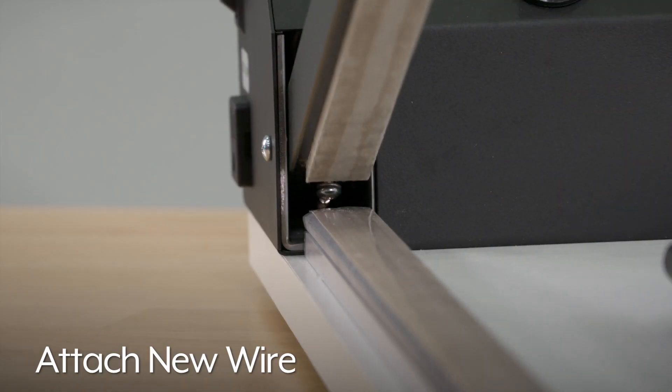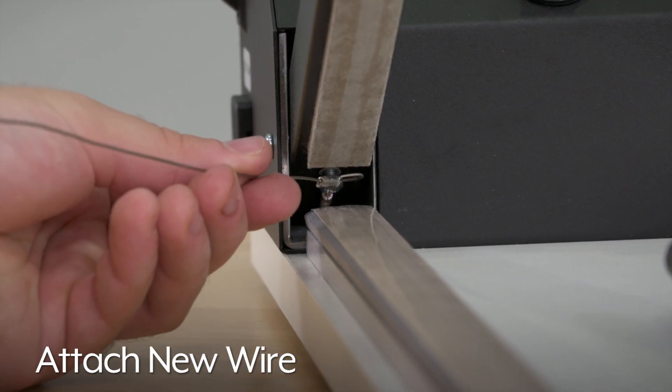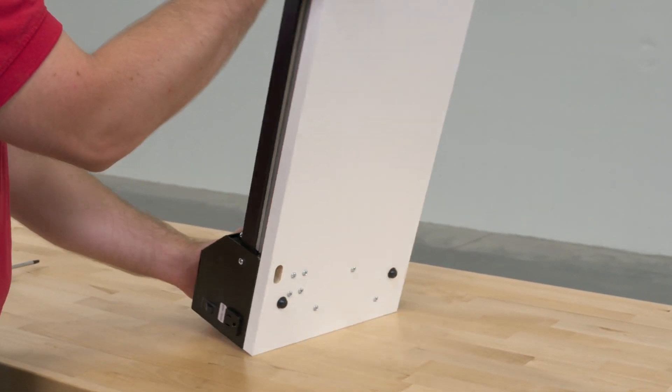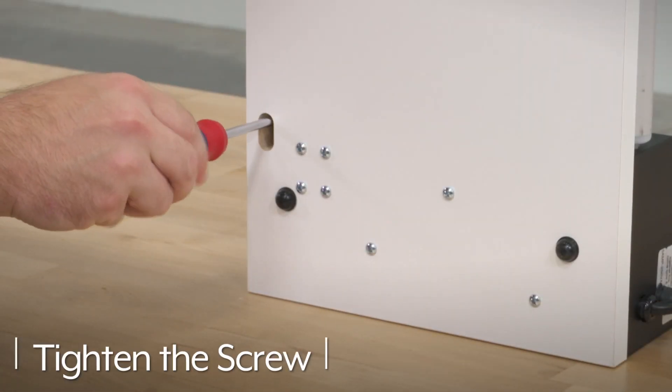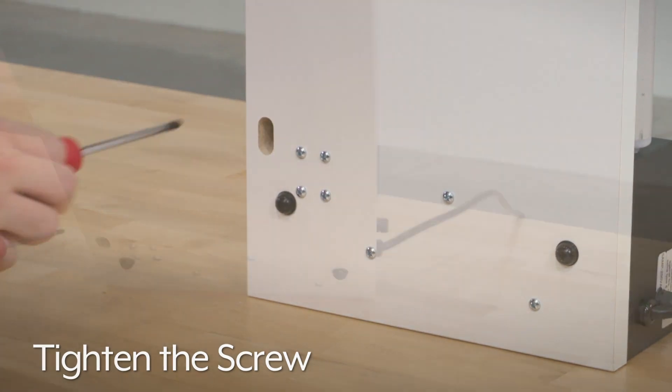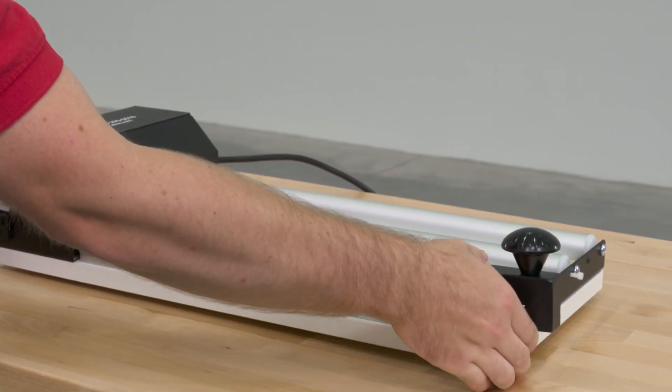Attach the new wire by placing the hook end around the screw. Through the access hole on the bottom of the sealer, use the Phillips screwdriver to tighten the screw and return the sealing arm to the up position.